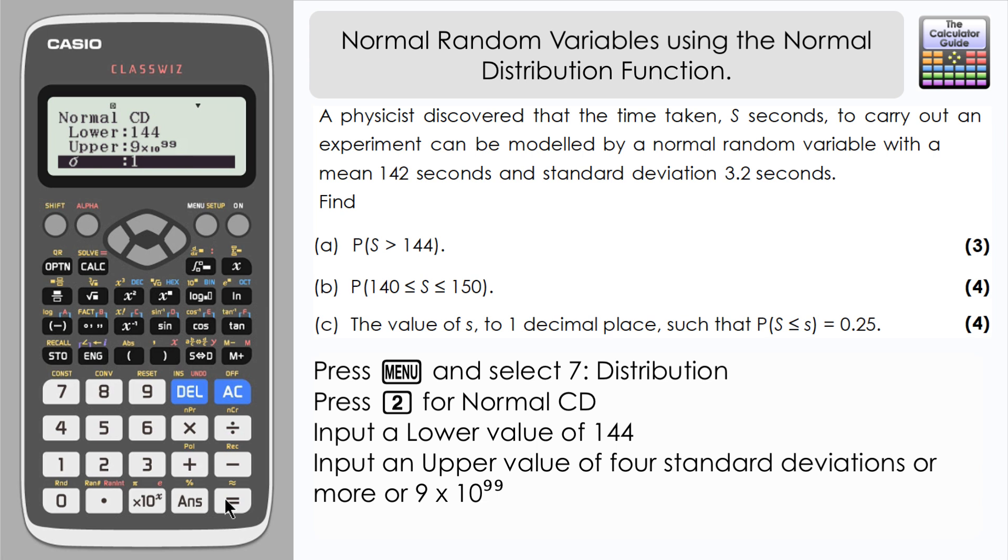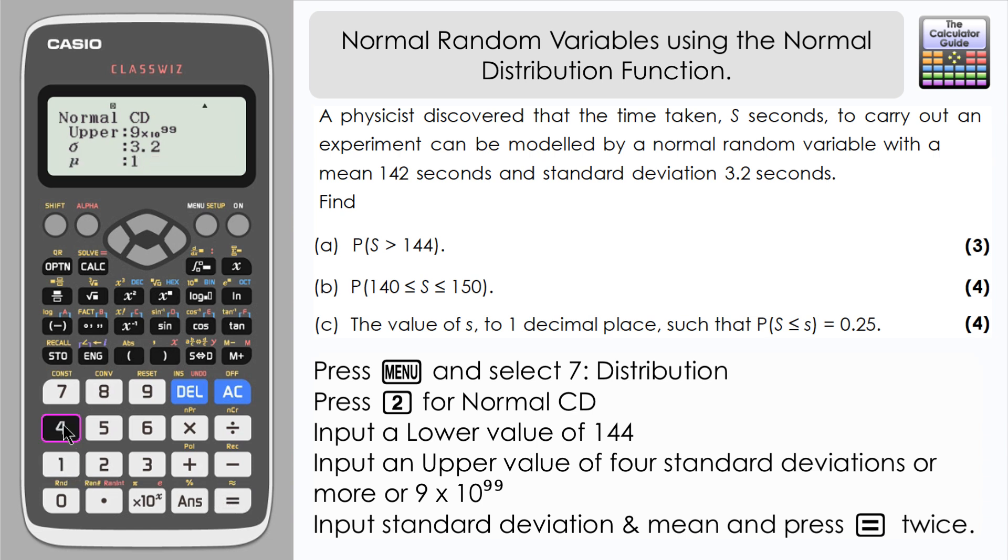Now we've got sigma, which is our standard deviation. So I'm going to input 3.2. Press equals. Then we've got mu, which is our mean, so that is 142. Press equals and equals again. And here we have our probability. It's given us 0.2659855 and so on. I would give this to four significant figures, so that's 0.2660. There we go, that's the answer to part A.